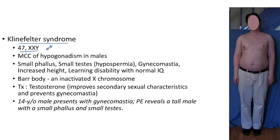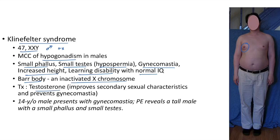Klinefelter syndrome: karyotype is 47 XXY — a male with an extra X. It is the most common cause of hypogonadism in males. Clinical features include small phallus, small testis leading to hypospermia, gynecomastia, increased height, and learning disability with normal IQ. There will be Barr body due to an inactivated X chromosome. Treatment: testosterone to improve secondary sexual characteristics and prevent gynecomastia.